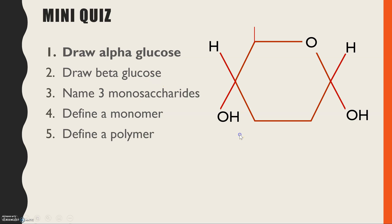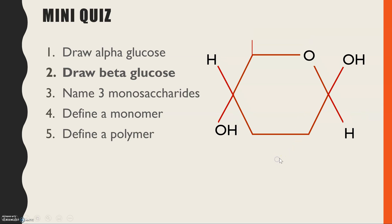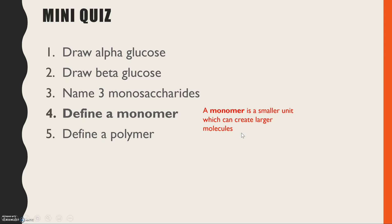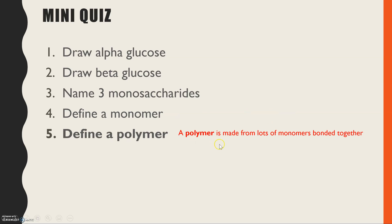Hopefully you have got a diagram showing your alpha glucose. Beta glucose — the only difference is on carbon one: the hydroxyl is now on top instead of on the bottom. Three monosaccharides that you need to know are glucose, fructose, and galactose. The definition of a monomer is that it's a smaller unit which can create larger molecules, and a polymer is made up of lots of monomers bonded together. So that recaps last lesson.